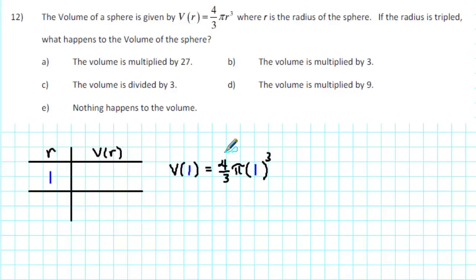When we substitute 1 into the formula, we get (4/3) times π times the cube of 1. The cube of 1 is 1, and 1 times (4/3)π is (4/3)π. So when the radius of the sphere is 1 unit, the volume of the sphere is (4/3)π cubic units.